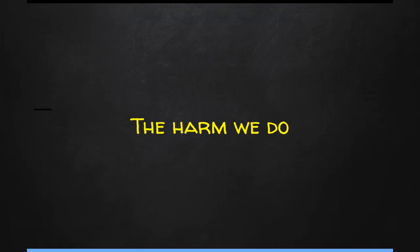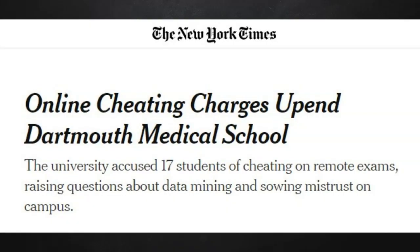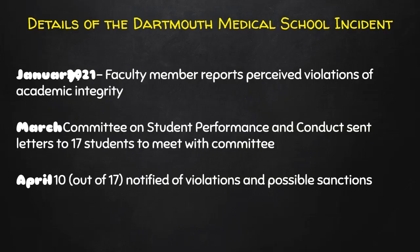This can result in real harm for students. This whole conversation has been developing in my head for years, but it was the Dartmouth Medical School incident that escalated it for me. In January of 2021, faculty members reported perceived violations of academic integrity to the Committee on Student Performance and Conduct. The committee investigated, and by March sent out 17 letters to meet with the committee. About a month later, 10 out of those 17 were notified of violations and possible sanctions against them.